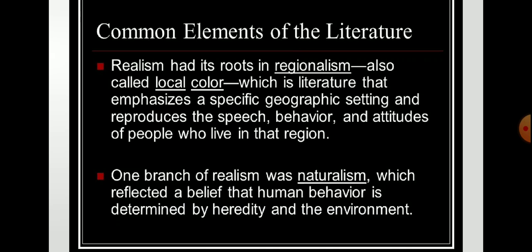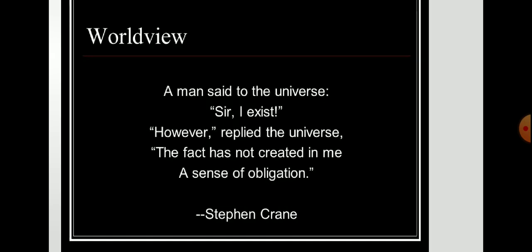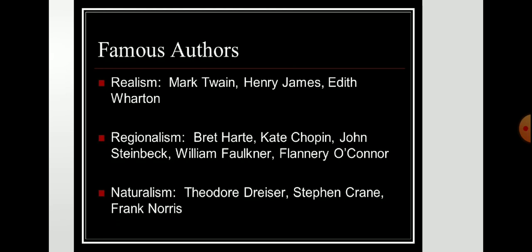Realism had its roots in Regionalism and also local color — literature that emphasizes a specific geographic setting, reproducing the speech, behavior, and attitudes of people who live in a particular region. One branch of Realism was Naturalism, which reflected a belief that human behavior is determined by heredity and environment. A line from Stephen Crane's poem reads: 'A man said to the universe: Sir, I exist. However, replied the universe, the fact has not created in me a sense of obligation.' Famous authors of Realism include Mark Twain, Henry James, and Edith Wharton.